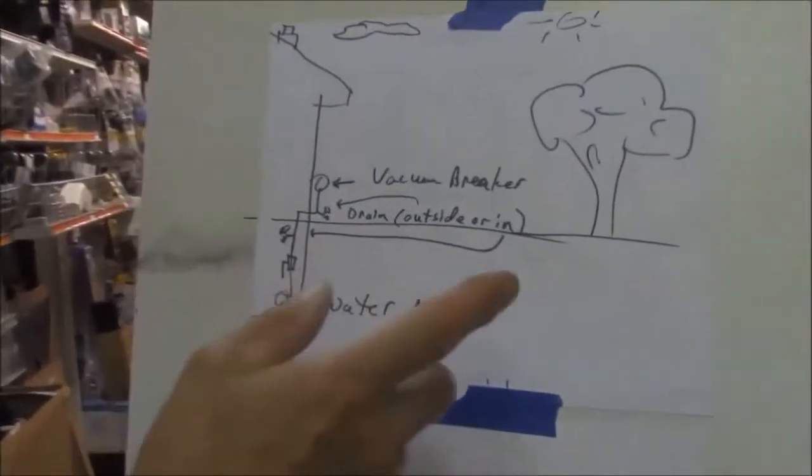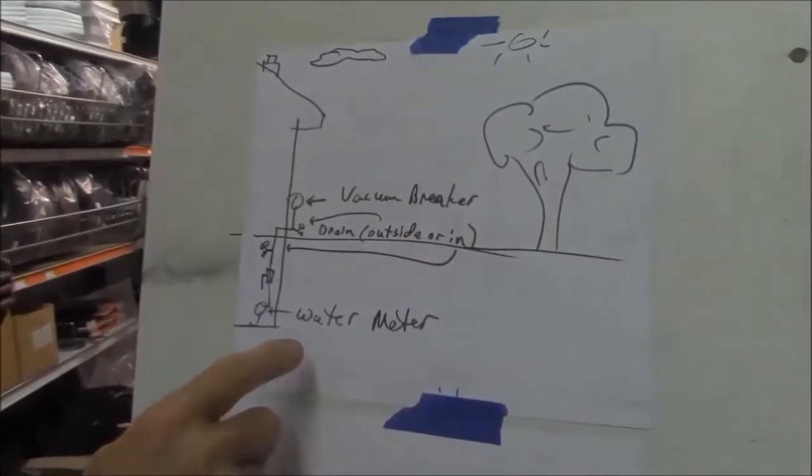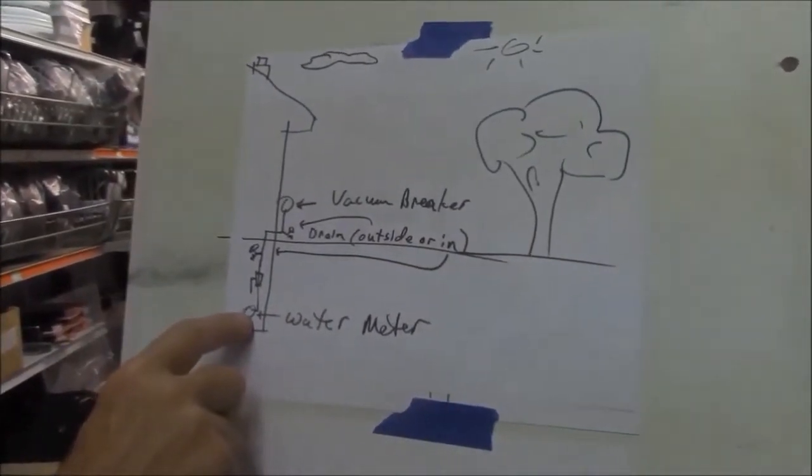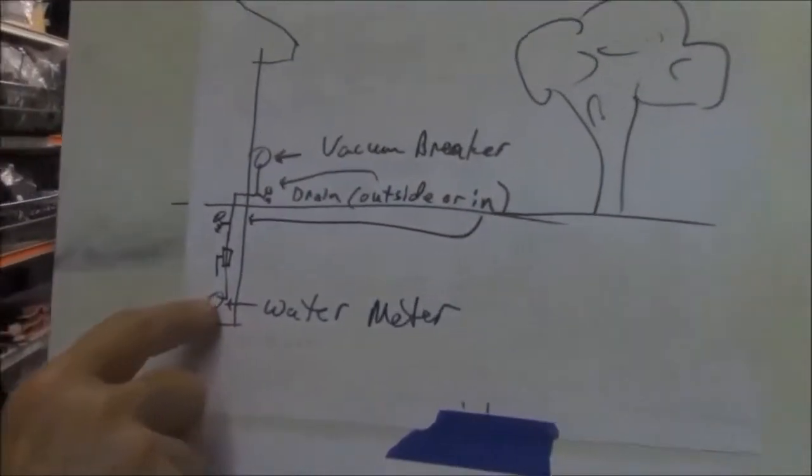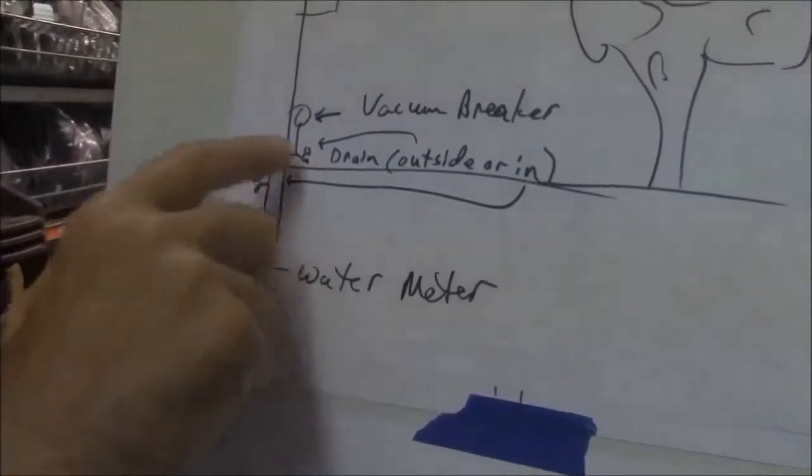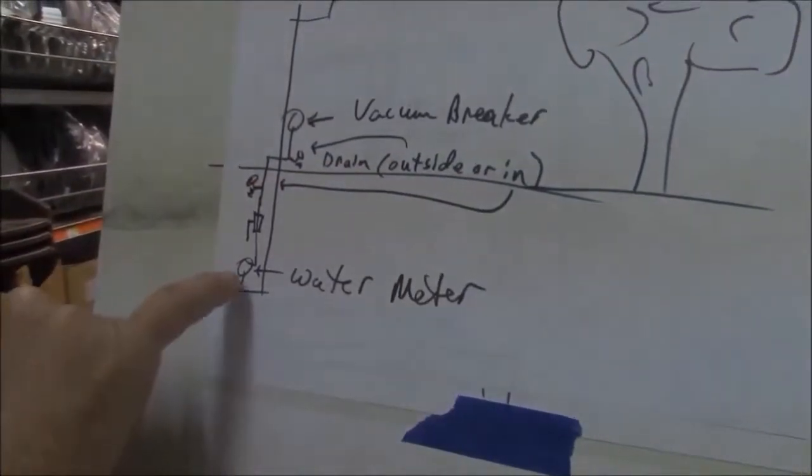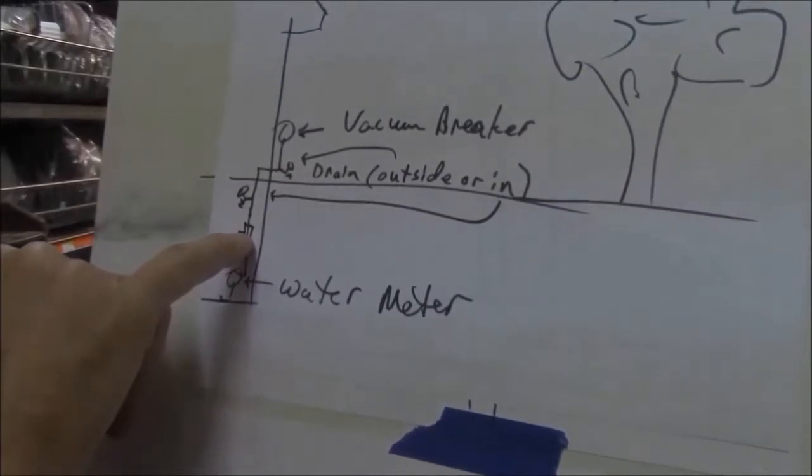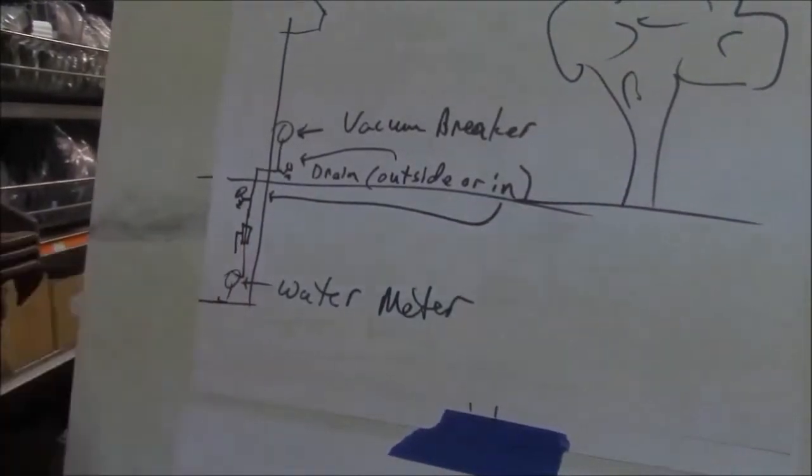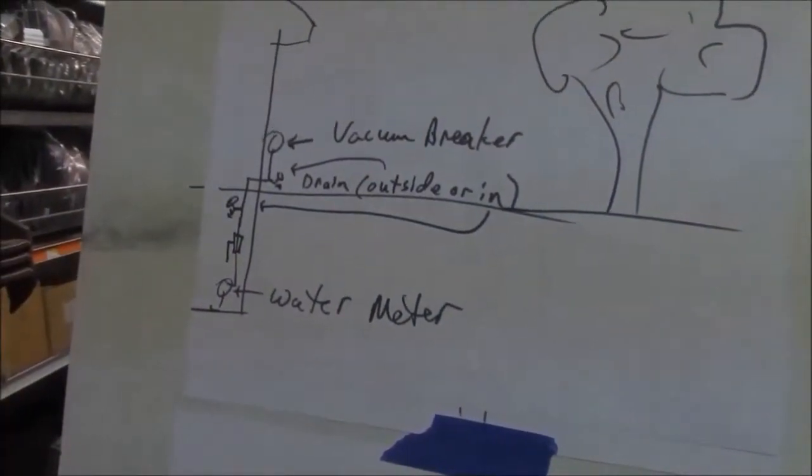We have this little sketch of a yard. In the basement of our house we have a water meter. We're going to have to put a separate feed to our sprinkling system, so we're going to come outside. We're going to have to have a separate shutoff, and we need a drain so that here in Michigan we have to winterize.